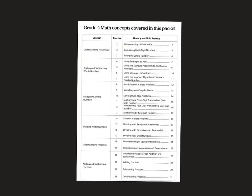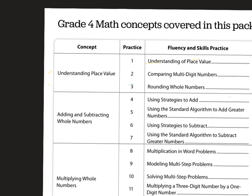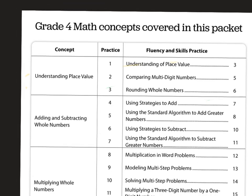Let's go ahead and look at our table of contents for our whole packet. You can see there's a total of 6 different concepts that we'll be going over for the next few weeks. First off we're going to be starting with understanding place value. Next we'll move on to comparing multi-digit numbers, and then finally we'll end off with rounding whole numbers. Alright, so let's get into today's lesson.